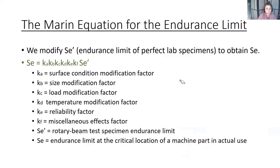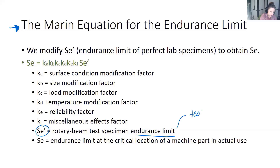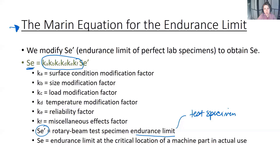The primary equation used to deal with fatigue strength is called the Marin equation. You should have covered this in ME 328, but we're reviewing it here. We start with SE prime — the endurance limit of a test specimen. We then modify that value to better approximate the endurance limit of the component in service, by multiplying by modification factors for surface condition, size, load, temperature, reliability, and miscellaneous effects.